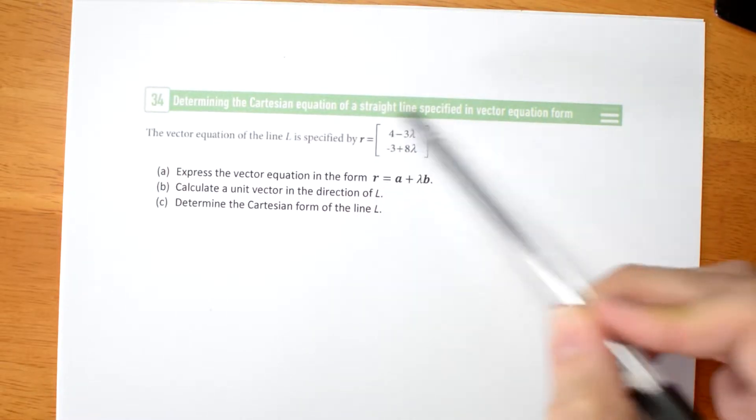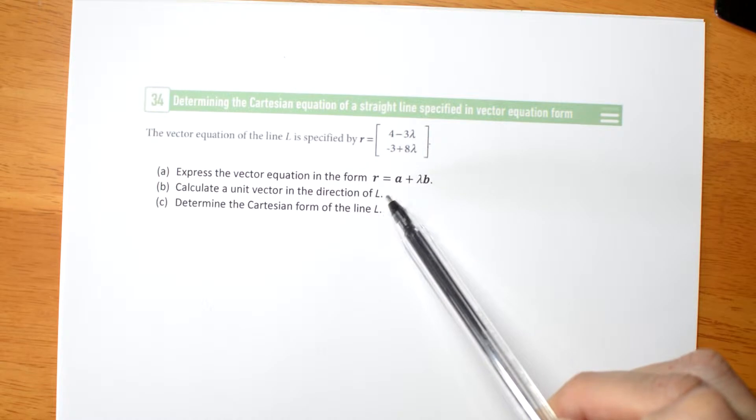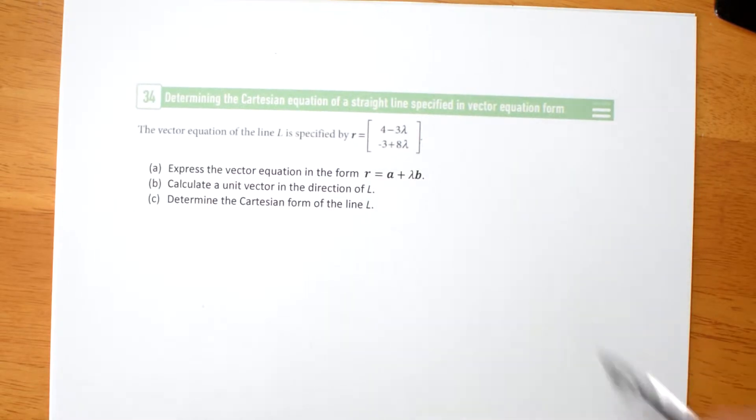Here's the vector equation of a line. We have to write it in a slightly different form, calculate a unit vector in the same direction as the line, and write the Cartesian form of the line.